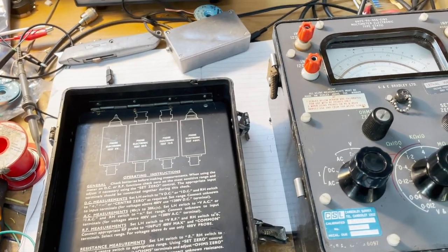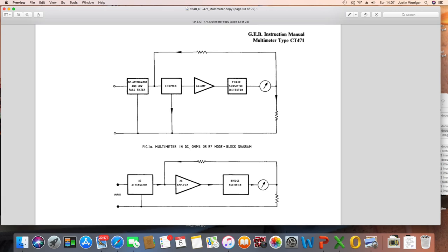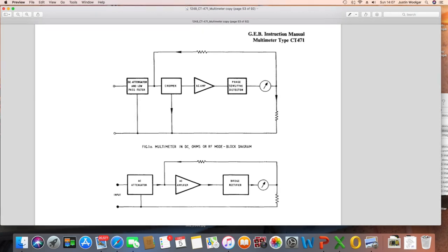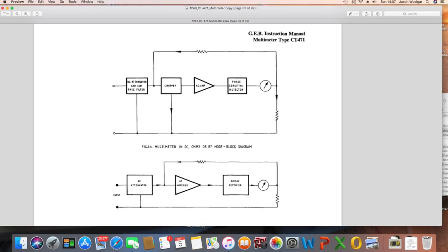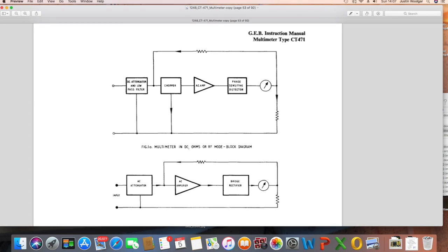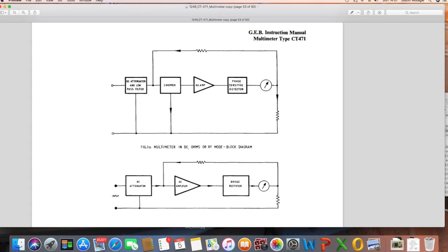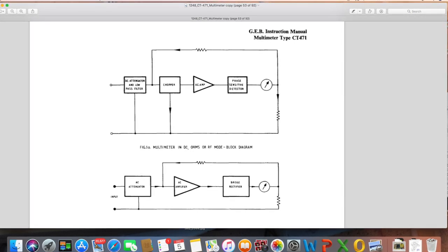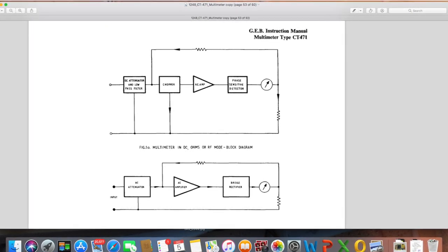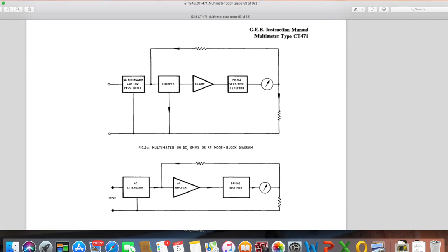Anyway, I've managed to dig out some information on this and I'll quickly show you the circuit diagram. As mentioned, the input of this meter if you're measuring DC, the DC voltages there's an attenuator and a low pass filter and the output of that then goes to a chopper, which I initially described as an oscillator because it does actually produce a waveform at its output.